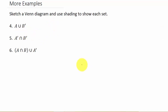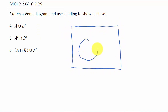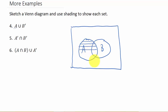Let's sketch the Venn diagram and use shading to show each set. Looking at number four, let's draw our circles — we've got set A and set B. We want A union the complement of B. What I like to do is shade in each set individually first, so let's shade in A with horizontal lines.